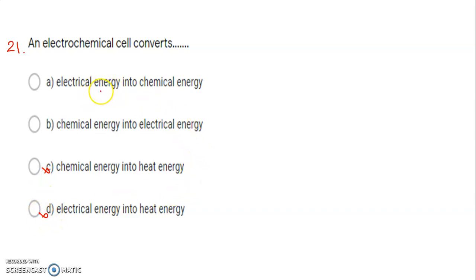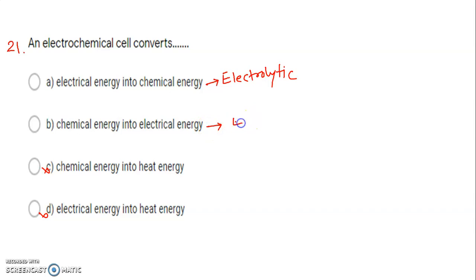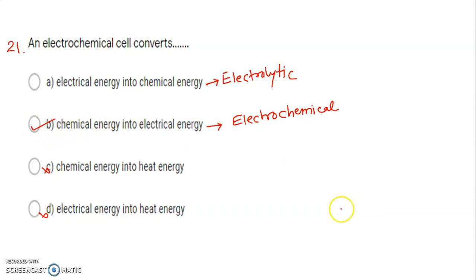There are two possibilities: electrical energy is converted into chemical energy — that cell is called an electrolytic cell. And if chemical energy is converted into electrical energy, then it is the electrochemical cell. The question asks about an electrochemical cell, so the correct answer is Option B: chemical energy into electrical energy.